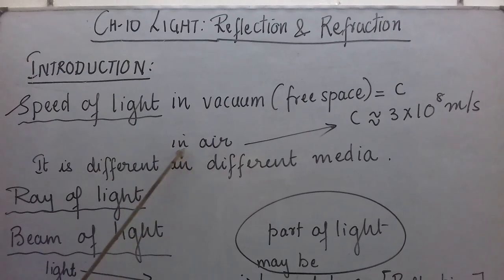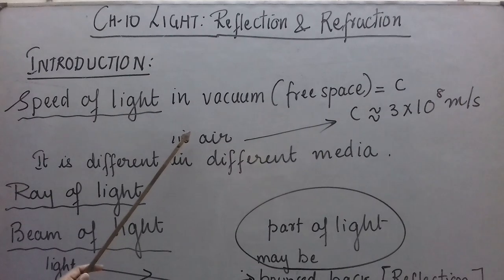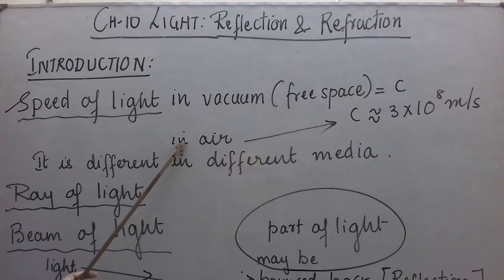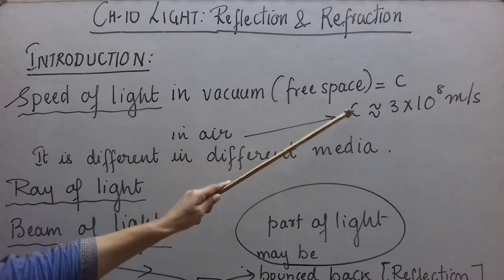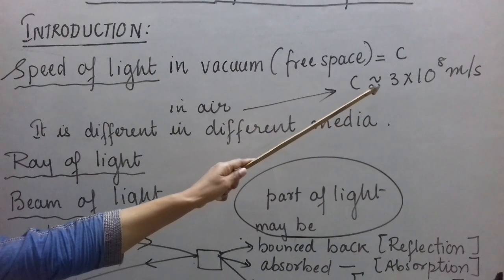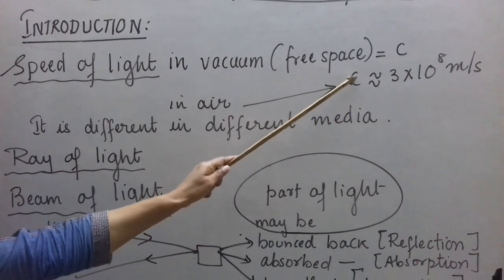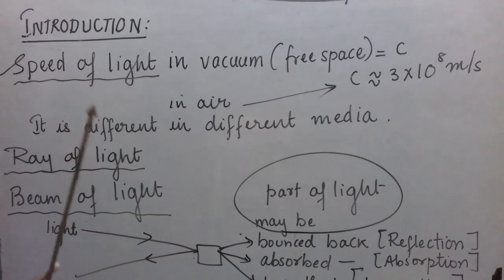In air, when we take the medium to be air, the value is slightly reduced but still for practical purposes or for numericals, we will assume the value to be same only. That is, speed of light in air is also taken to be C, that is 3 into 10 raised to 8 meter per second. In all other media, speed of light is reduced.